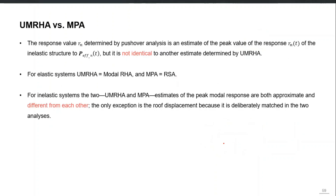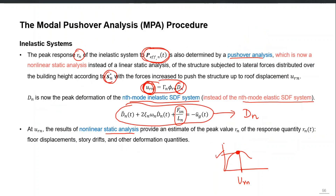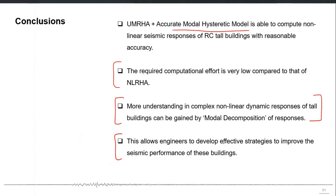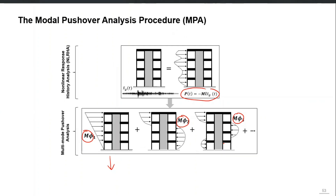This is an overview of the MPA procedure. The next step is to plot the pushover curve for each mode using the modal inertial load pattern of that mode, then calculate the target displacement of each mode and extract the responses at that particular target displacement for each mode.